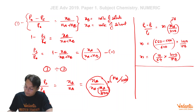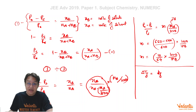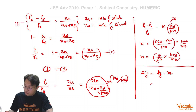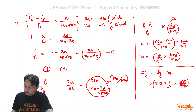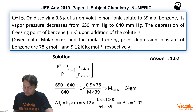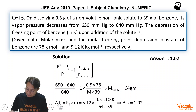The final part: delta Tf equals Kf times m. The Kf for benzene is 5.12. So delta Tf equals 5.12 multiplied by (10/640) multiplied by (1000/78), which simplifies to 5.12 times 0.05 times 1000 over 78, giving the final answer shown here.